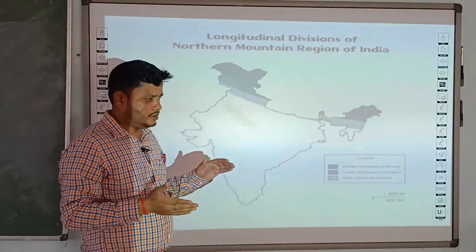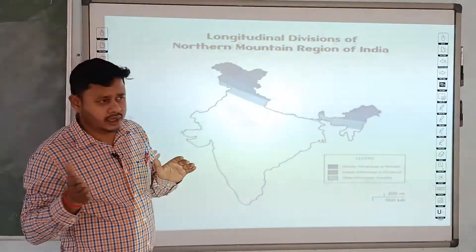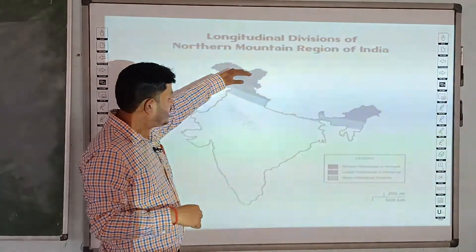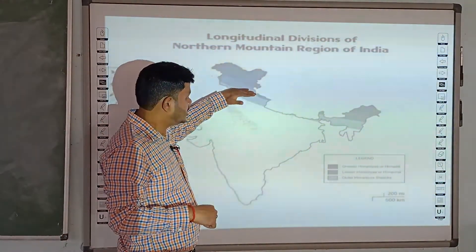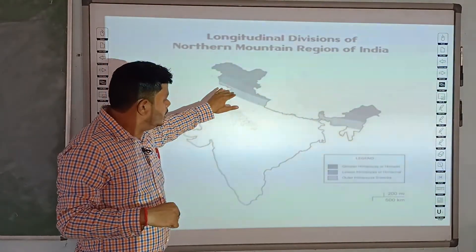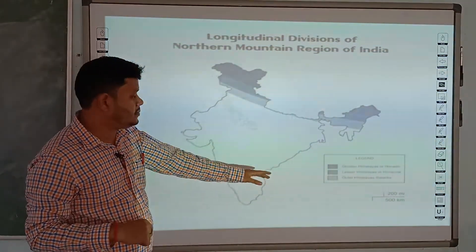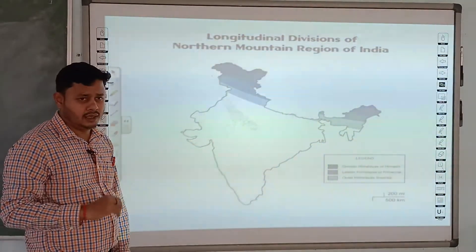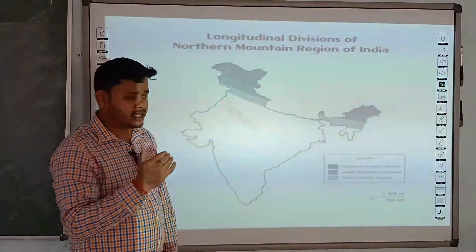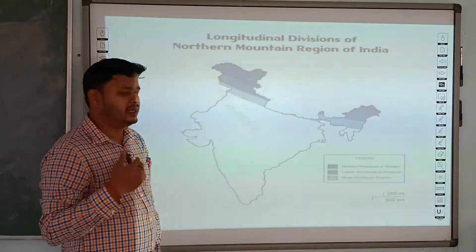After the second round of collision, another range is created — shown here in dark blue — and we call it the Lesser Himalaya. So in the first collision we created Himadri, and under the second collision we created the Lesser Himalayan range.